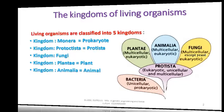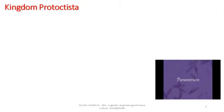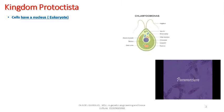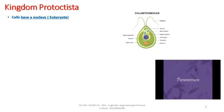Kingdom Protista: cells have a nucleus — eukaryote. Most are unicellular. Some are multicellular, but their cells are not differentiated; they are not specialized for doing different jobs.